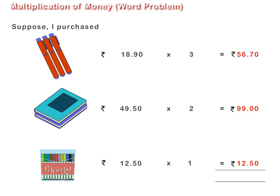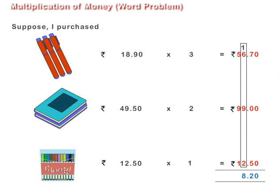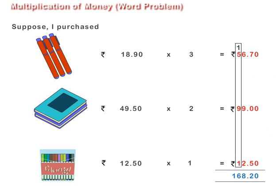Add Rs. 56.70, Rs. 99, and Rs. 12.50 to find the total money spent by me. The total money I spent on these 3 items is Rs. 168.20.